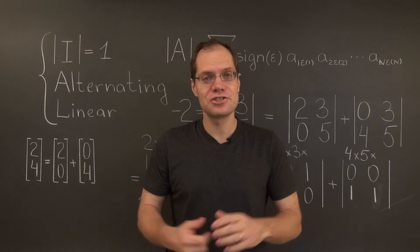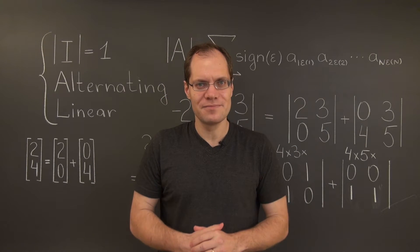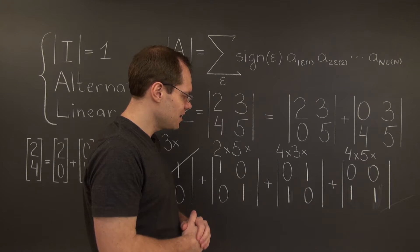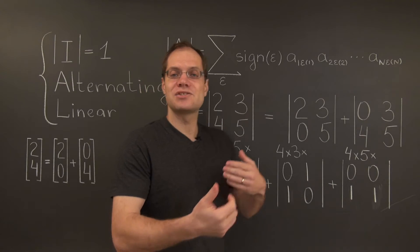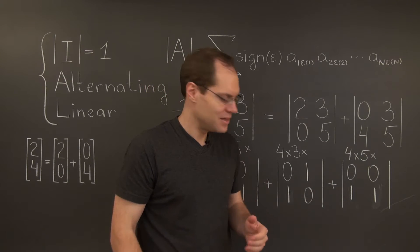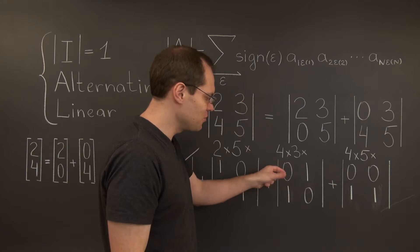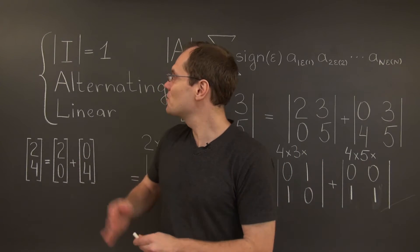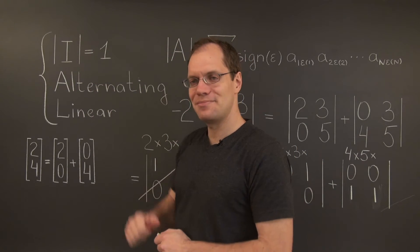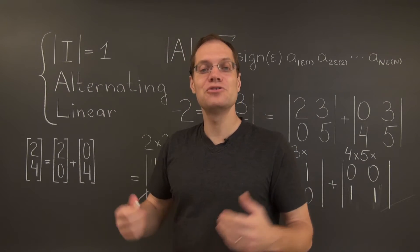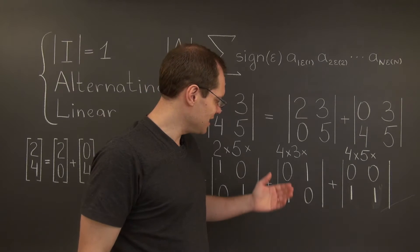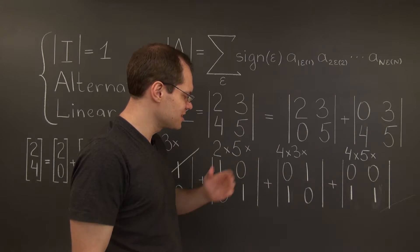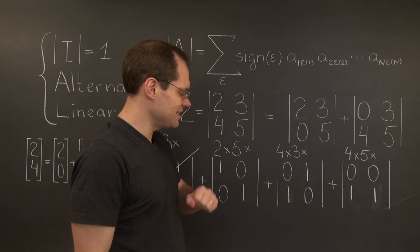By the alternating property, the determinant of this matrix equals minus one times whatever we end up with. And we end up with the identity matrix whose determinant is one. Therefore, the determinant of this matrix is minus one.